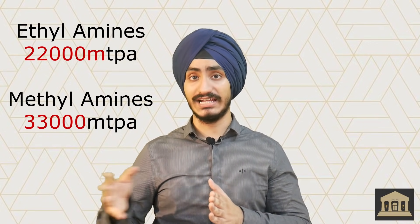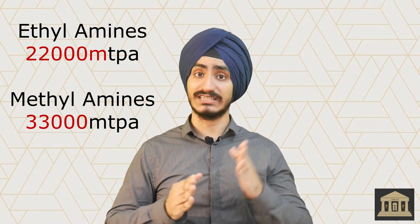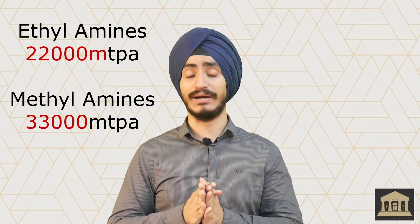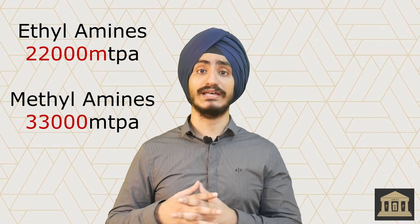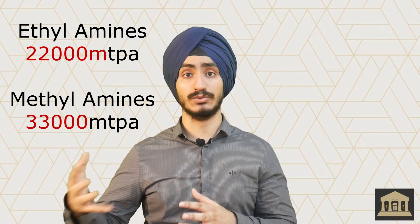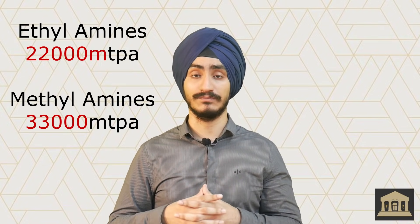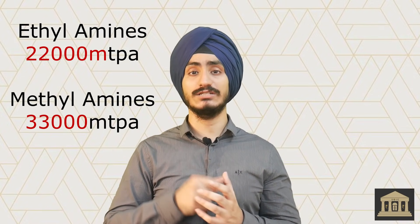Coming back to Aliphatic Amines: Ethyl Amines capacity is at 22,000 tons per annum, while Methyl Amines capacity is at 33,000 tons per annum. An interesting observation is that from 2014 to 2017, the company's stock chart was essentially flat because the company was running into capacity constraints — orders were in hand but new capacity wasn't yet commissioned.